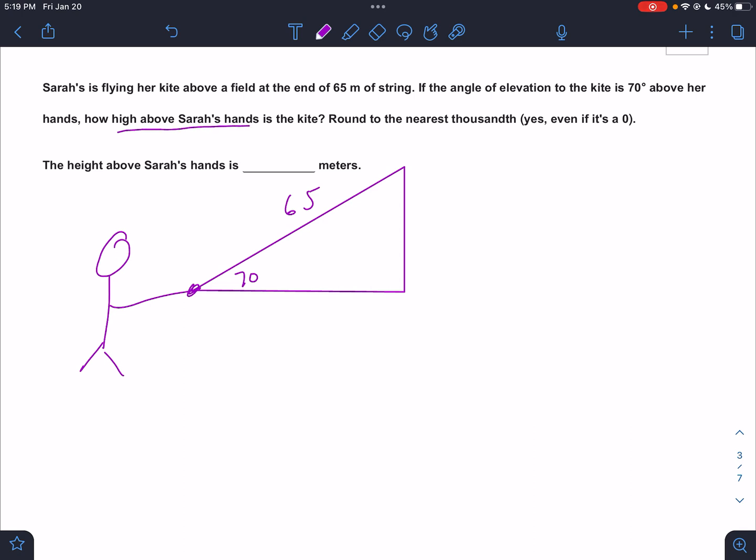The angle of elevation above her hands is 70 degrees. How high above Sarah's hands? So that's what we're looking for. Is this the height above the ground? No, because her hands are not on the ground. So like if her hands were three feet in the air, then that means that the kite would be x plus three above the ground. But that's not this problem. It just said how far above her hands.